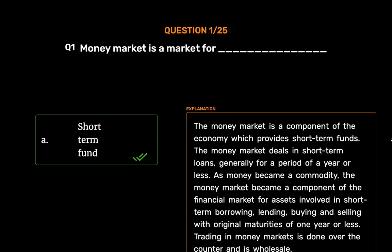The money market is a component of the economy which provides short-term funds. The money market deals in short-term loans, generally for a period of a year or less. As money became a commodity, the money market became a component of the financial market for assets involved in short-term borrowing, lending, buying and selling with original maturities of one year or less. Trading in money markets is done over-the-counter and is wholesale.